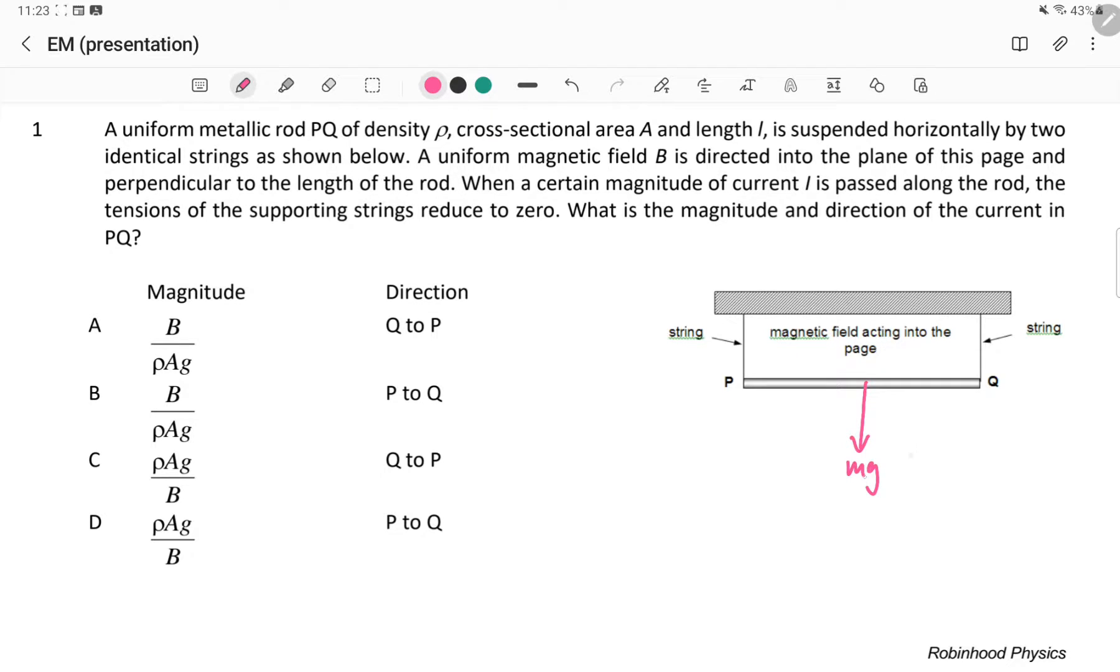So the weight of the rod is mg. We don't know the mass but we know the density and the volume. So this will be area times length, which gives us the volume, times density times g.